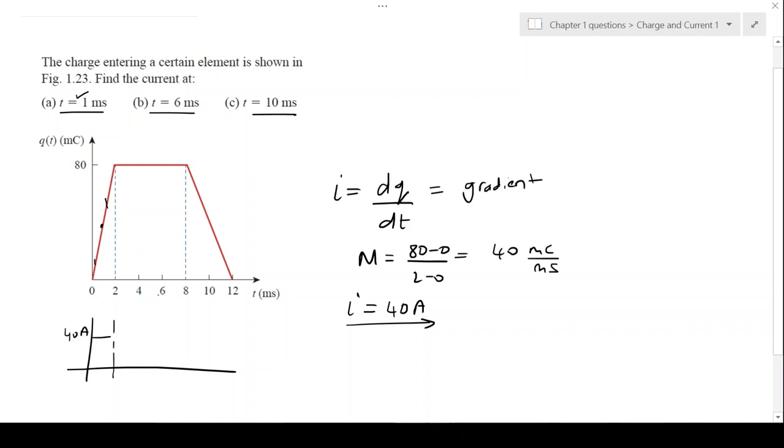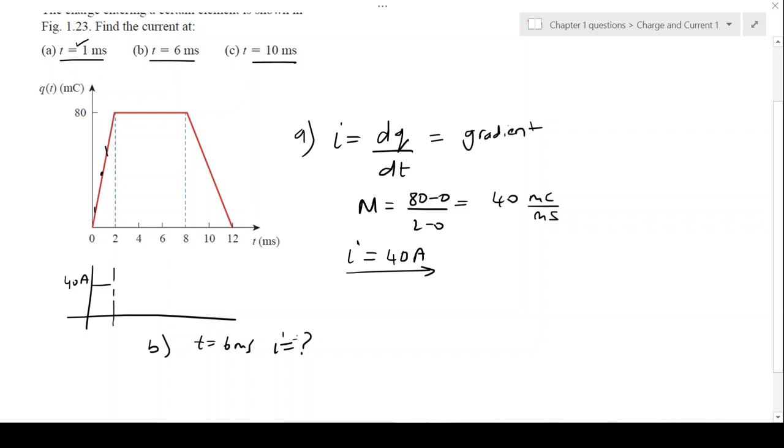What about the current at t = 6 milliseconds? We can see at this point, you've got a horizontal line. The graph would be Q (charge) equals 80.